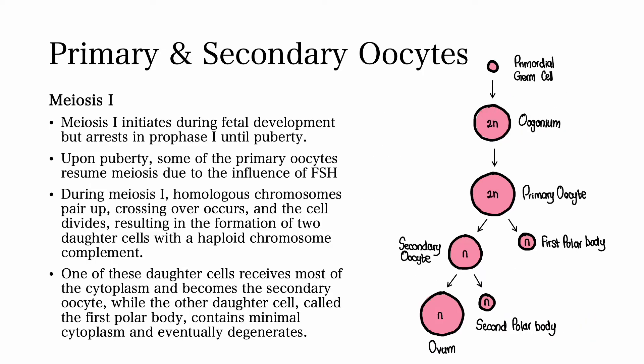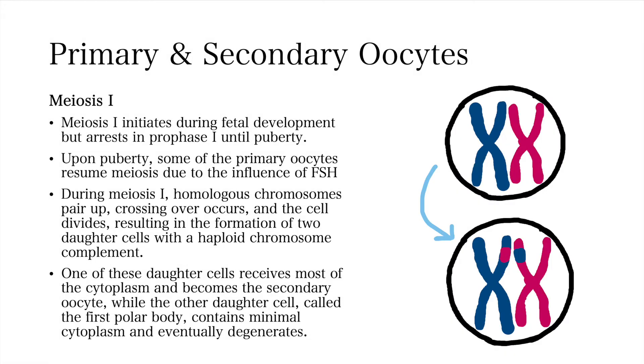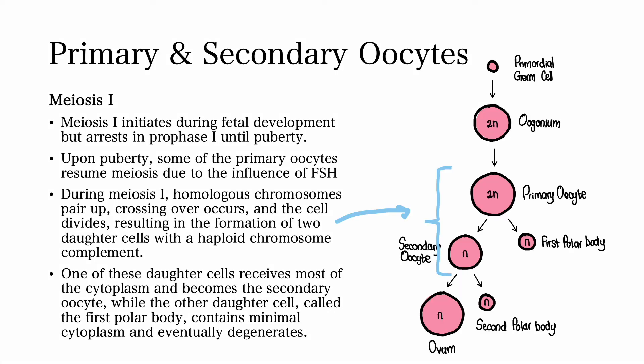During meiosis I, homologous chromosomes pair up, crossing over occurs, and the cell divides, resulting in the formation of two daughter cells with the haploid chromosome complement. One of these daughter cells receives most of the cytoplasm and becomes the secondary oocyte, while the other daughter cell, called the first polar body, contains minimal cytoplasm and eventually degenerates.